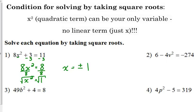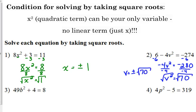Let's look at example 2. 6 minus 4v squared is equal to negative 274. So we need to start by subtracting 6 from both sides. So we get negative 4v squared is equal to negative 280. Divide both sides by negative 4. V squared is equal to 70. 70 is not a perfect square, but that's okay. We will just write it as plus or minus square root of 70.